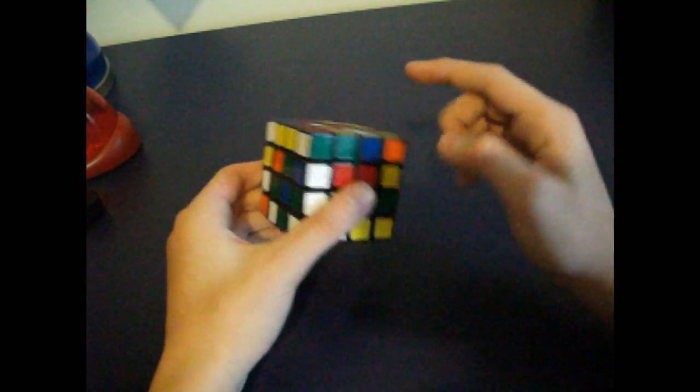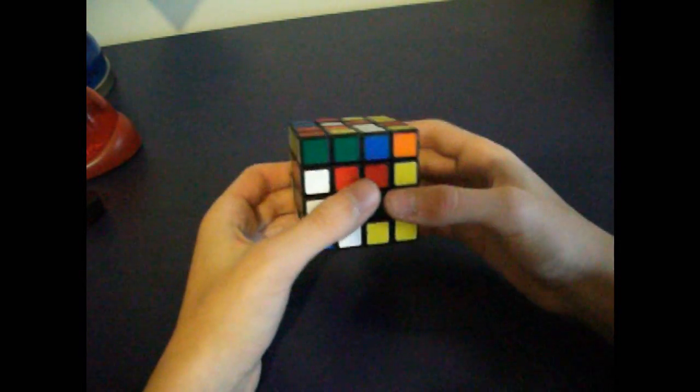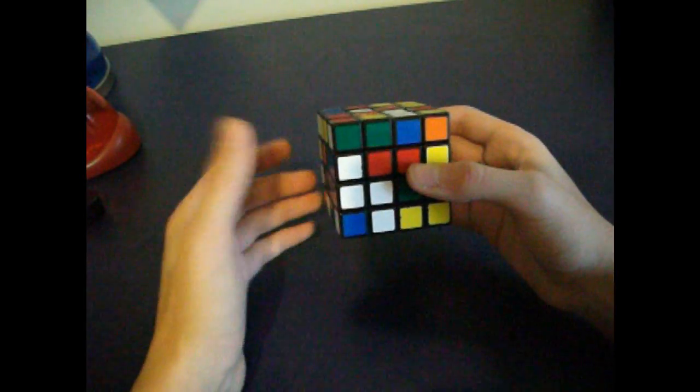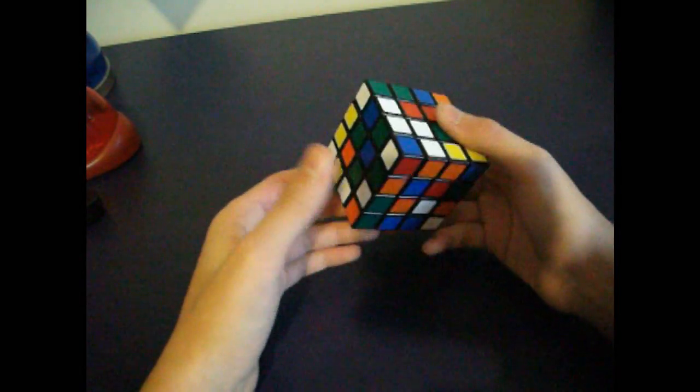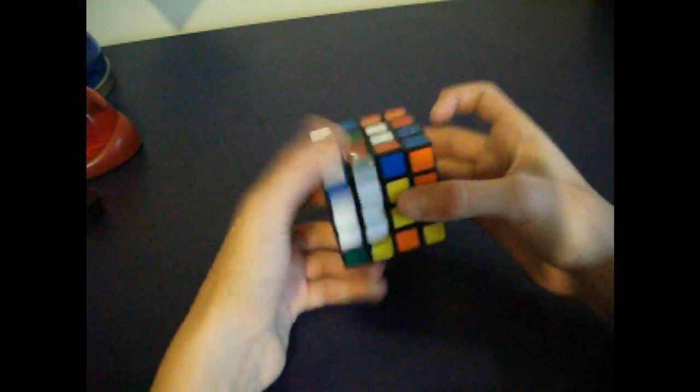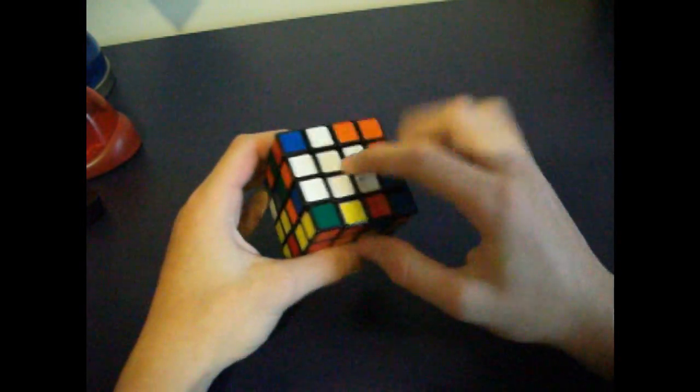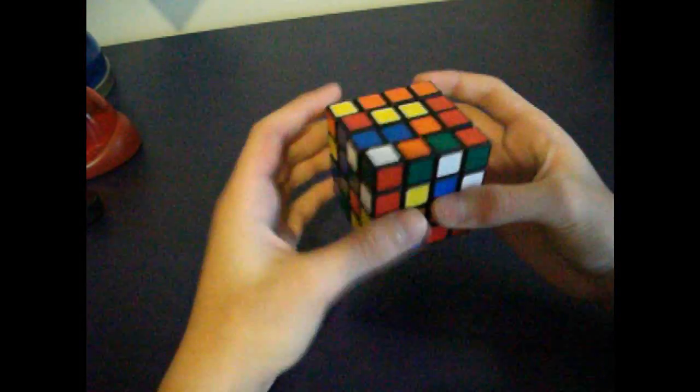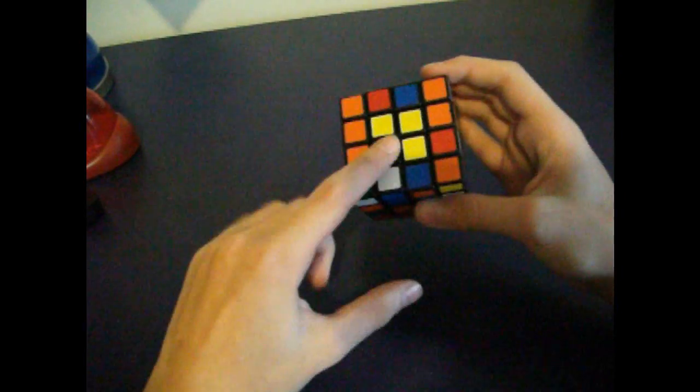First thing you want to do is solve two opposite centers, and one of them should be the color that you normally start with on a 3x3. So I'm going to do that. I've got the white center, and now I've got the yellow center.